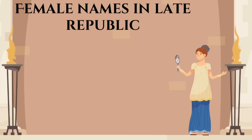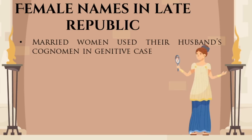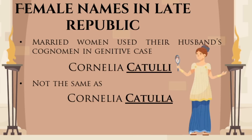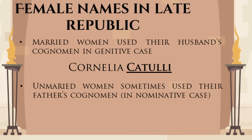The rising popularity of the cognomen changed female naming conventions as well. In the early republic, women did not change their name upon marriage. But now a married woman could add her husband's cognomen in the genitive case to her own name to signify her new marital status. If Cornelia marries one Valerius Catullus, she can be known as Cornelia Catulli. This is not to be confused with Cornelia Catullus, who would have been a daughter of a Cornelius Catullus if born in the late Roman Republic. The custom of women using the feminine form of their father's cognomen also became popular during that age — Marcus Licinius Crassus, for example, had two daughters: Licinia Crassa Maior and Licinia Crassa Minor.